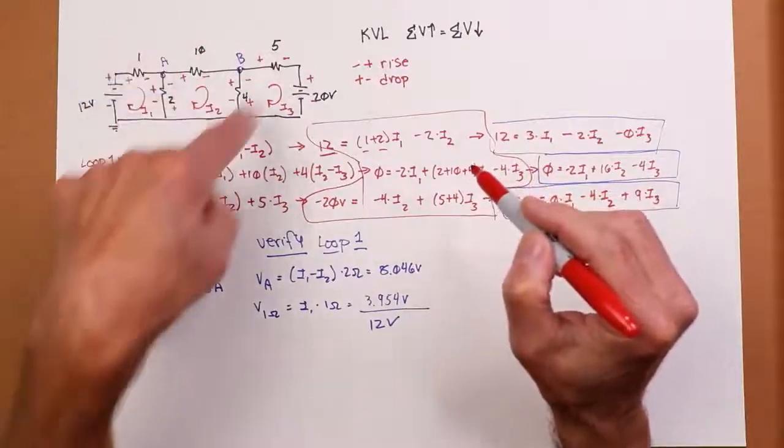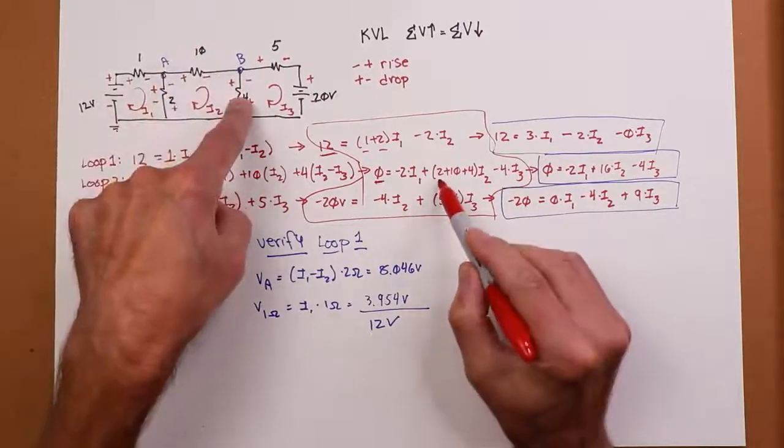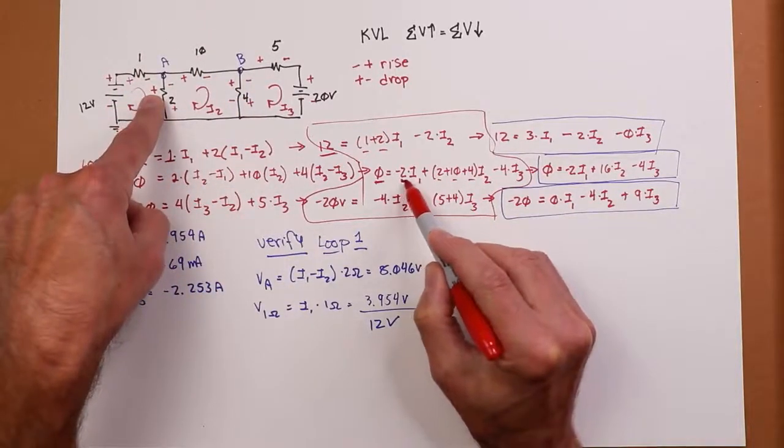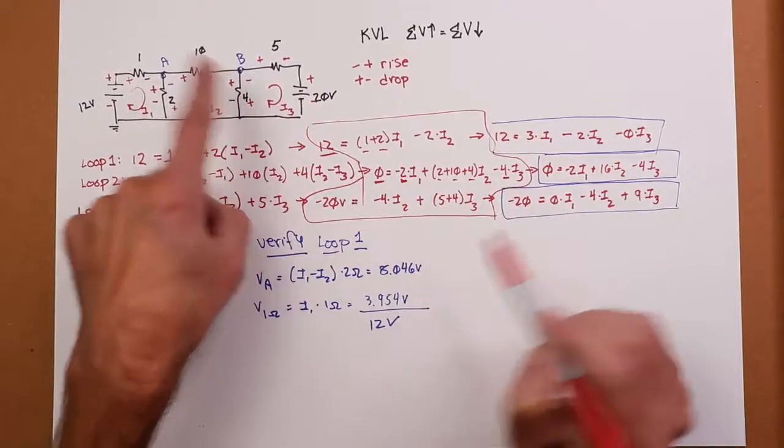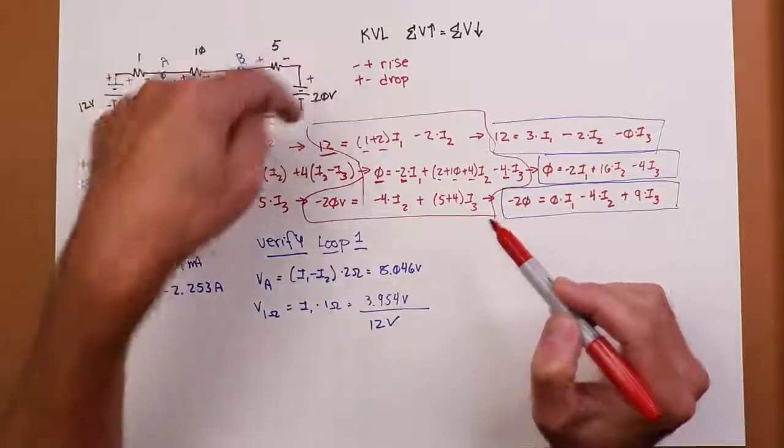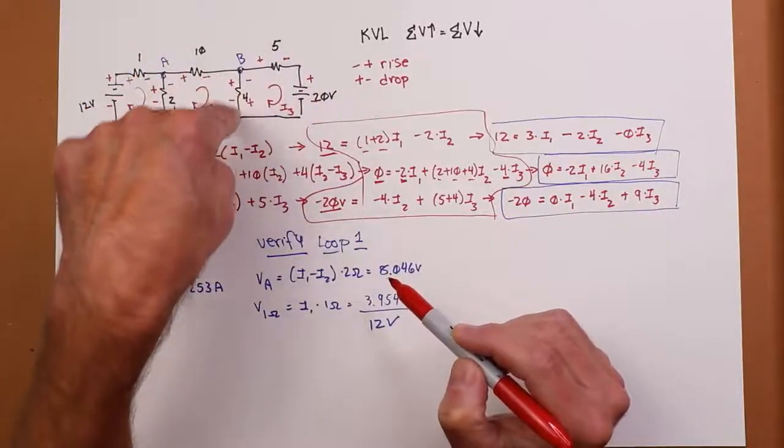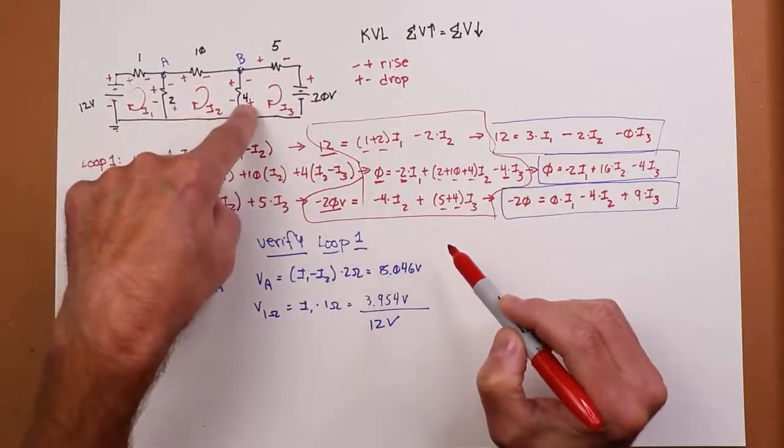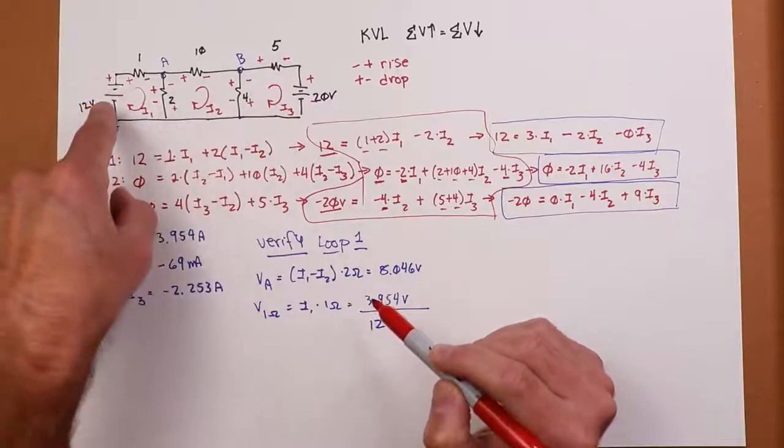Moving on to this. What do I have for voltage sources in the loop? I don't have any. Zero. What does this flow through? It flows through a 2, a 10, and a 4. Anything in that group common with loop 1? Yeah, the 2. Shows up negative. Anything in this loop common with 3? Yeah, the 4. Also shows up negative. Done with that loop. Move to the next one. What do I have for sources? 20. Current's going in, so that shows up as a negative 20 volts. What resistance does that current flow through? The 4 and the 5. Is there anything in that group that's common with loop 2? Yeah, the 4. Shows up negative. Is there anything in that loop that's common with loop 1? No. So, that shows up as 0. And there's your set.